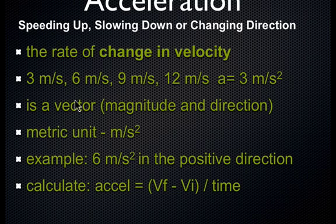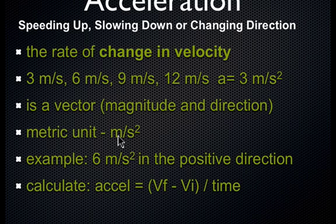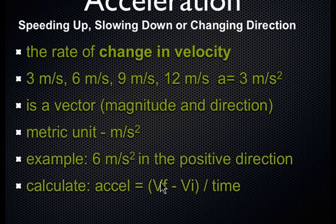Velocity is a vector — it has a magnitude and a direction. For example, 6 meters per second in the positive direction. Directions could be up, down, left, right, east, west, positive, or negative. The unit for acceleration is meters per second squared, meaning every second our velocity is increasing some number of meters per second. Velocity is meters per second; acceleration is meters per second squared. To calculate it, it's the change in velocity divided by time: v-final minus v-initial, divided by time.